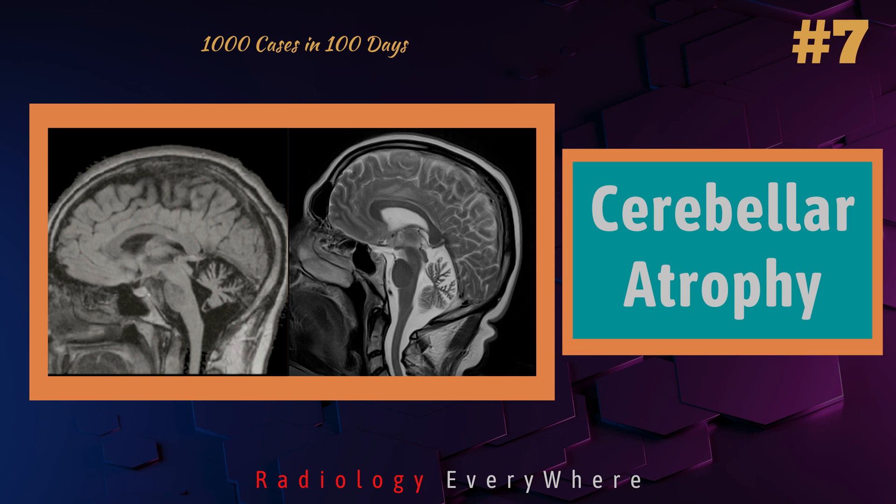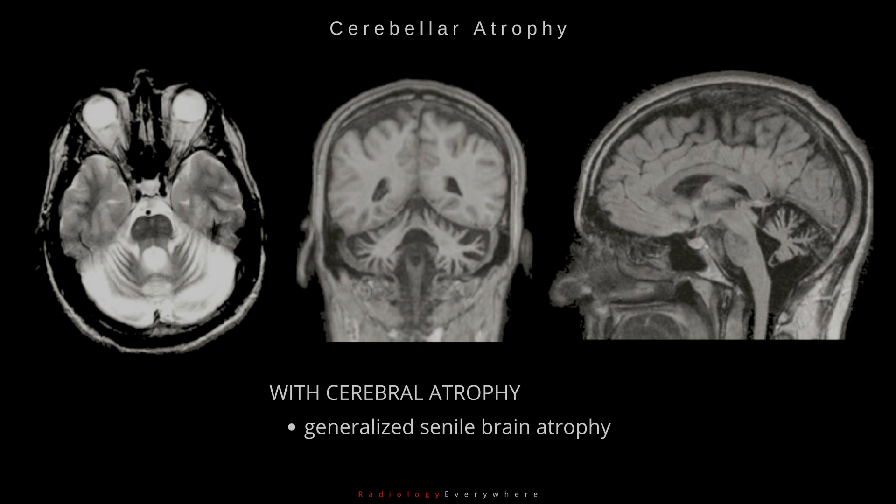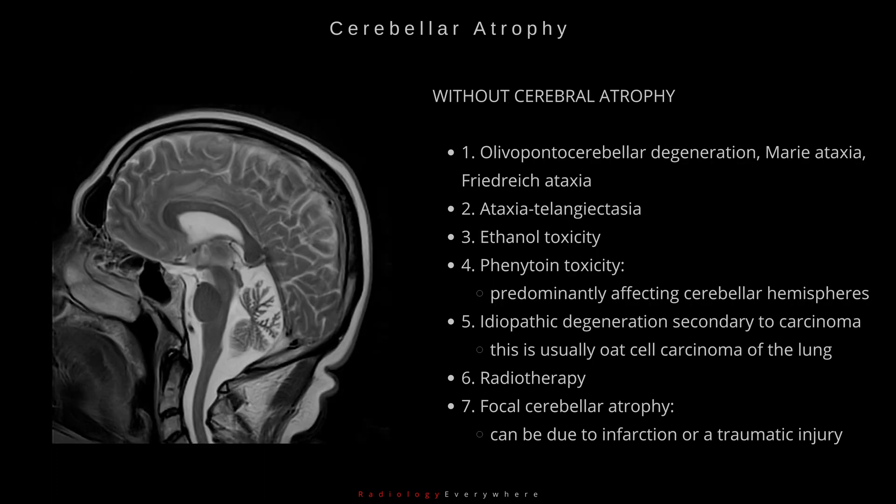Today, we are going to talk about the differentials of cerebellar atrophy. If you consider cerebellar atrophy with cerebral atrophy, generalized senile brain atrophy has to be considered. If you consider cerebellar atrophy without cerebral atrophy, the cause is to be considered.